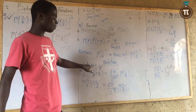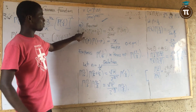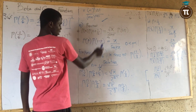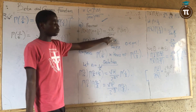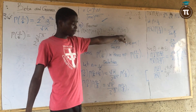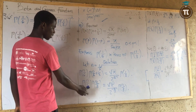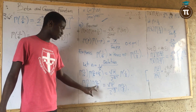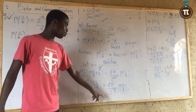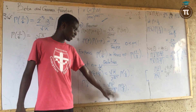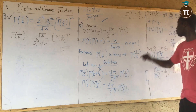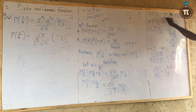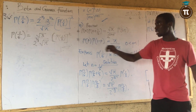We want to express gamma of one sixth in terms of gamma of one third. Using the duplication formula with n equal to one sixth: gamma of one sixth times gamma of (one sixth plus one half) equals root pi over 2 raised to power (2 times one sixth minus 1) times gamma of (2 times one sixth). Since one sixth plus one half equals two thirds, and 2 times one sixth equals one third, we get gamma of one sixth times gamma of two thirds equals root pi times 2 raised to power (minus two thirds) times gamma of one third. Call this equation 1.